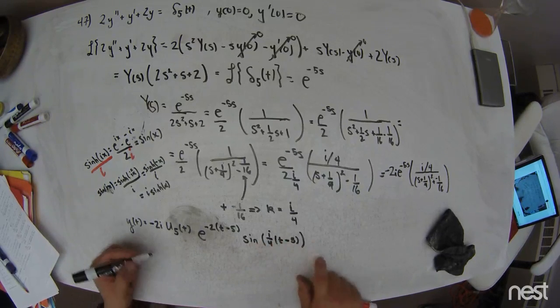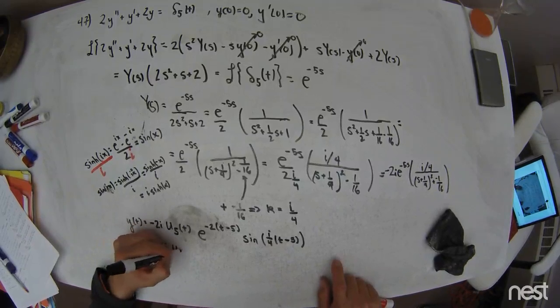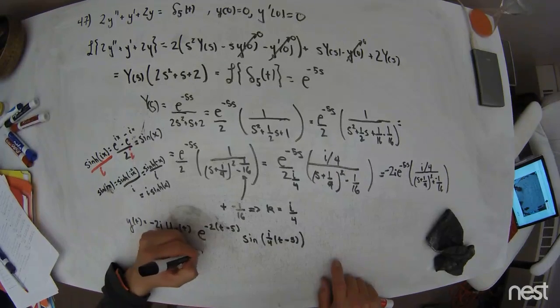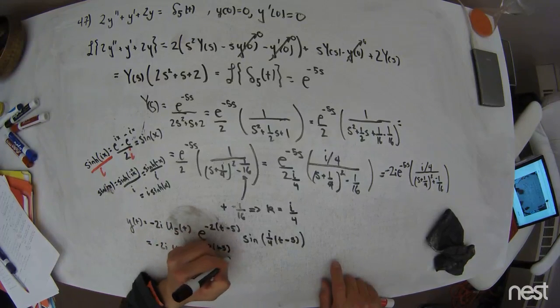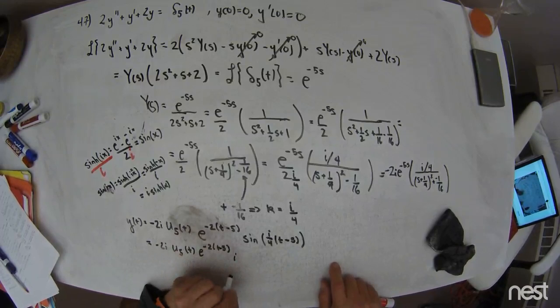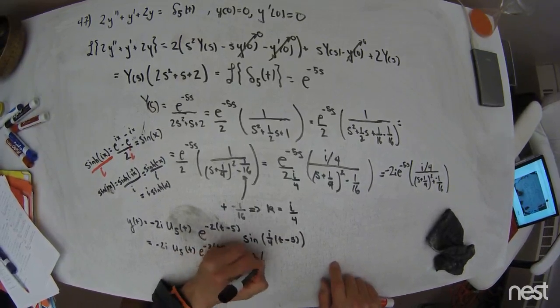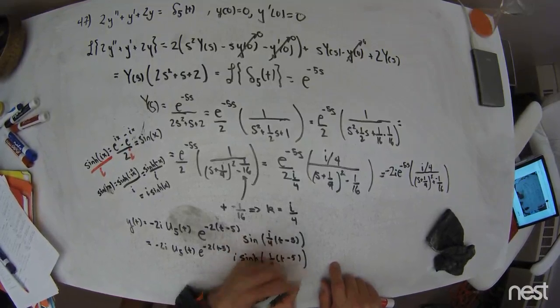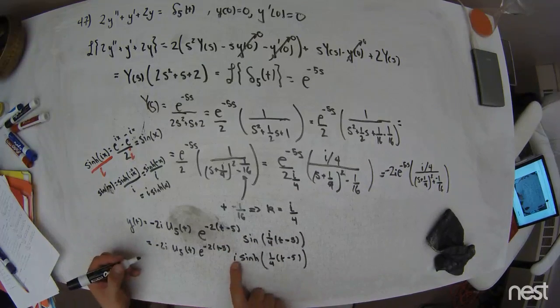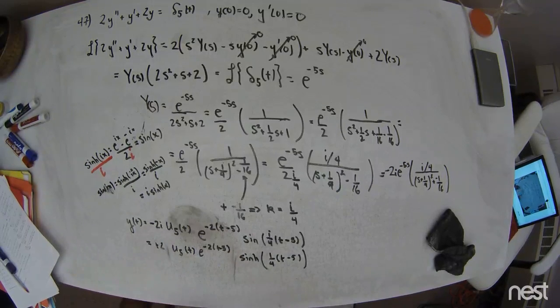Well, this sine of i stuff, that'll be negative 2i u5t e to the negative 2t minus 5 times i, sinh, 1 fourth t minus 5. But then the i hits that i, right? So those i's go away, and then give it negative, so this becomes a positive. Alright.